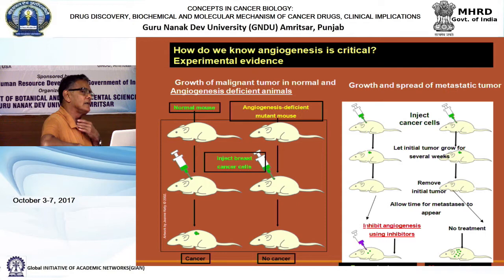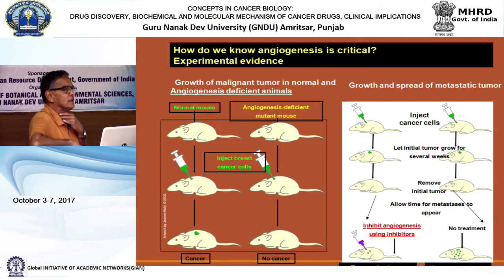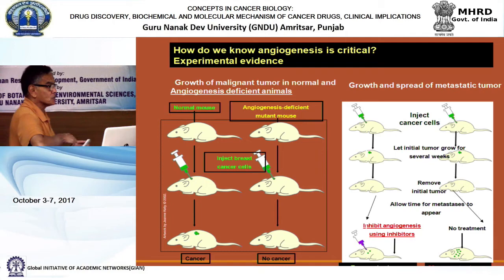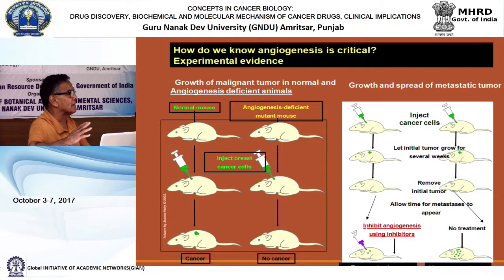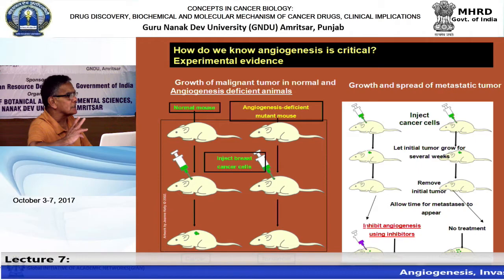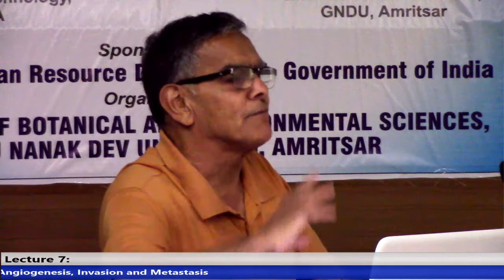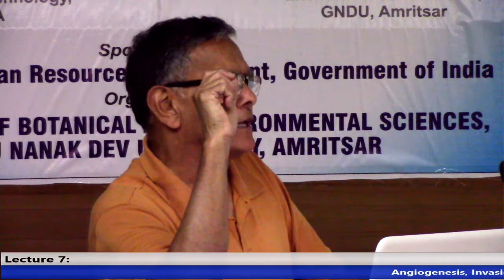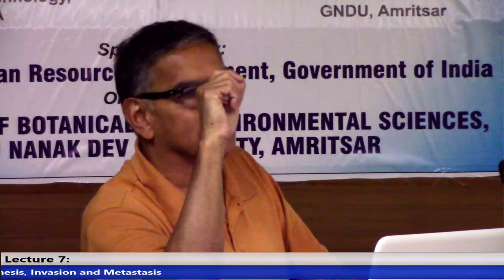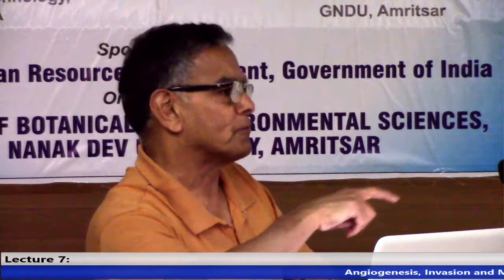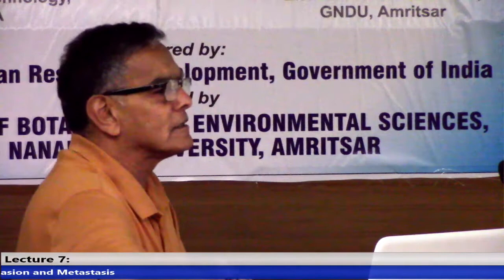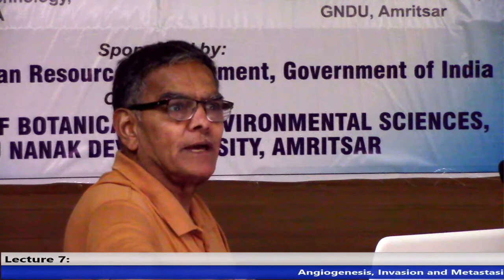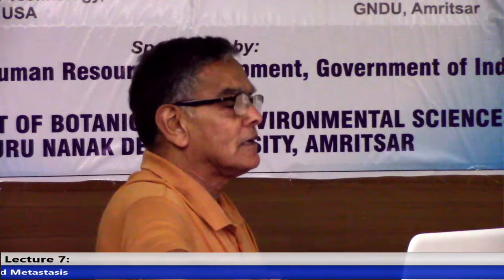Knockout mouse models are popular for studying cancer. For example, if studying estrogen receptor alpha function, using an ER-alpha knockout mouse allows you to confirm that a specific function is caused by ER-alpha - if that function is eliminated in the knockout, it is definitive proof. NIH and research institutes create both knockout mice and gene-overexpressing mice.